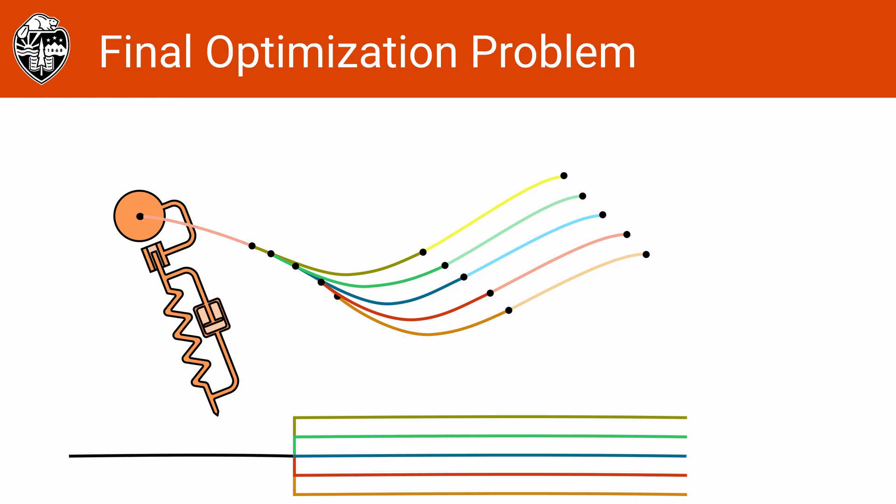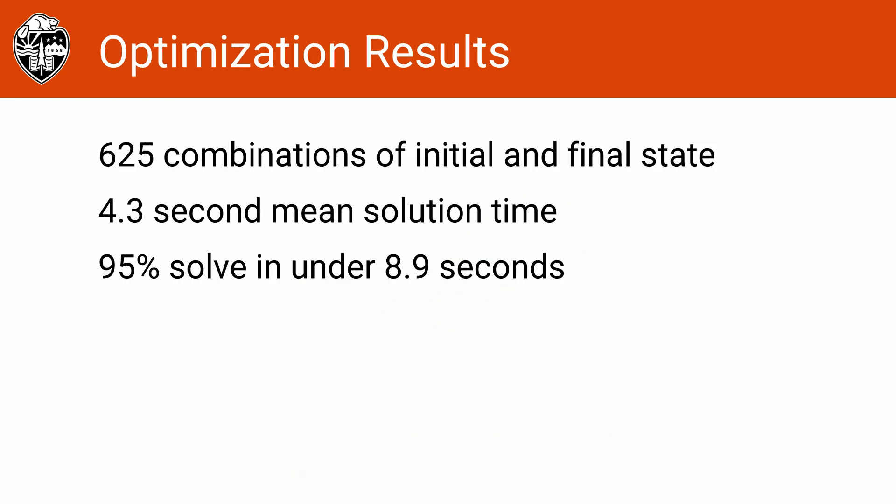We convert the direct collocation problem into a sparse nonlinear optimization problem, which is then solved using IPOPT. To evaluate the optimization results, we generate motion plans for 625 sets of initial states and final goal states. The mean time to solve was 4.3 seconds, and 95% of successful solutions were solved in under 8.9 seconds. This is too slow for real-time control, but as a tool for offline gait development, it is perfectly usable.